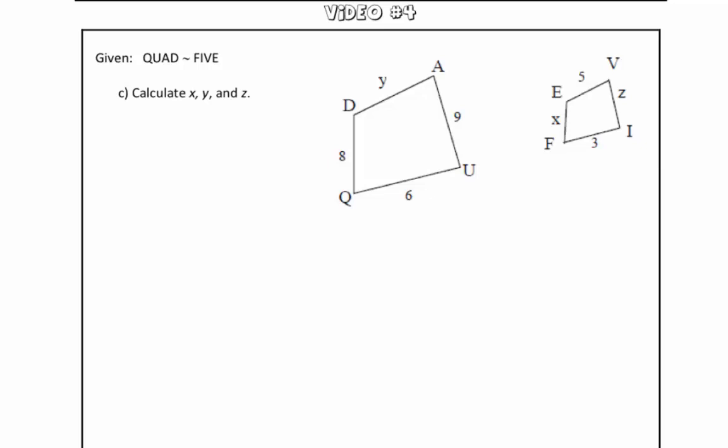Let's go ahead and start with x. So in order to solve for missing parts of similar polygons, what we want to do is set up proportions that use the corresponding parts of these polygons. So if we are trying to solve for x, well x corresponds with 8 in quadrilateral QUAD. So we have x over 8 is equal to, what we want to set it equal to is another pair of corresponding parts that we know. So x over 8 is equal to, let's use 3 over 6.